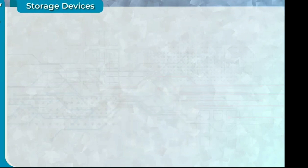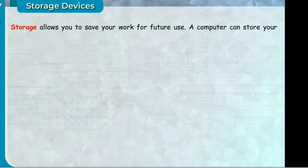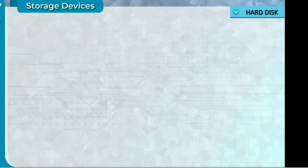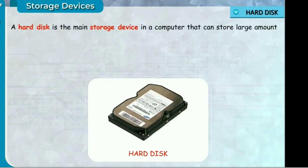Storage devices. Storage allows you to save your work for future use. A computer can store your work in different storage devices. Some commonly used storage devices are: Hard disk — a hard disk is the main storage device in a computer that can store a large amount of data at a very fast speed.